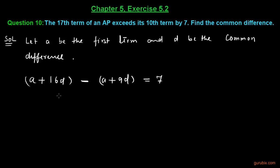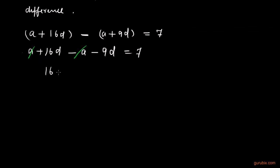So, now we shall solve this equation. This is A plus 16D minus A minus 9D equals 7. And now we can cancel out this negative A with this positive A. And what we get now? We get 16D minus 9D equals 7. And this equals 7D equals 7.